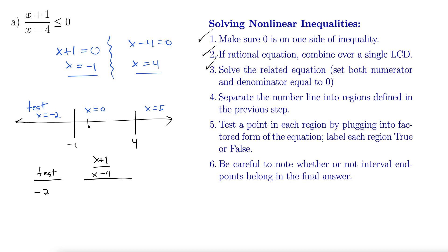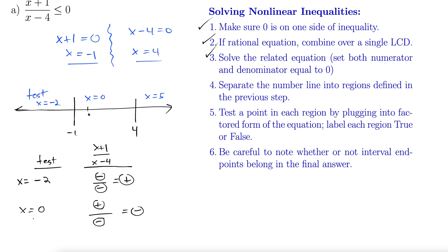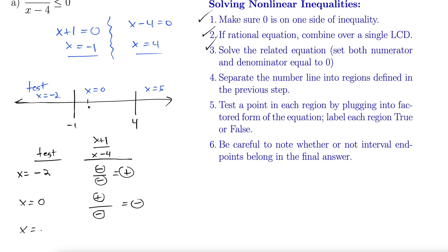We test by plugging into x plus one over x minus four. We don't need full numbers — just whether the result is positive or negative. For x equals negative two: negative over negative, which is positive. For x equals zero: zero plus one is positive, zero minus four is negative — positive divided by negative is negative. For x equals five: five plus one is six, positive; five minus four is one, positive — positive divided by positive is positive.